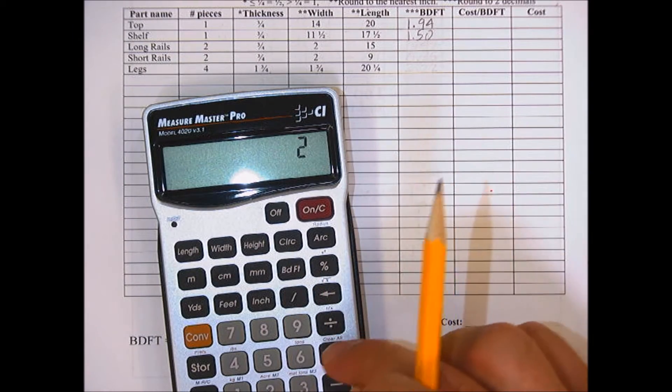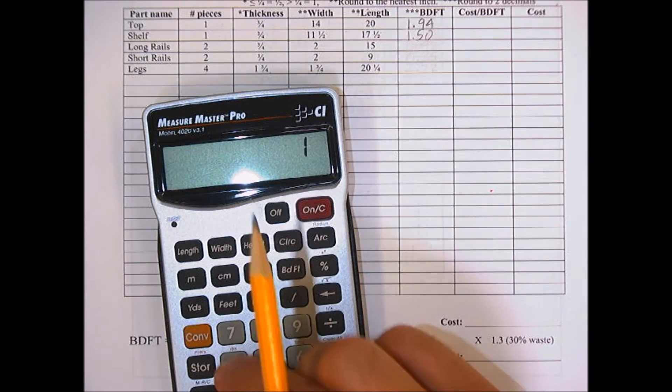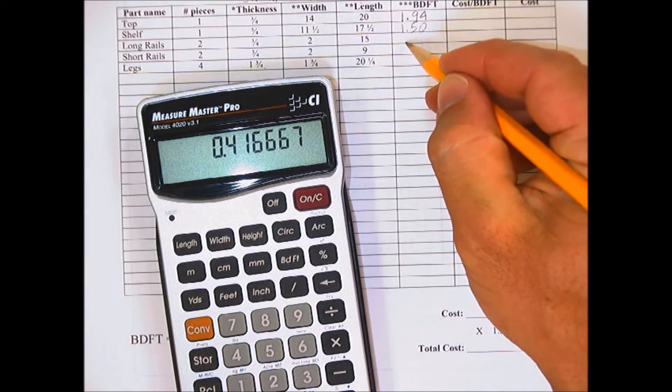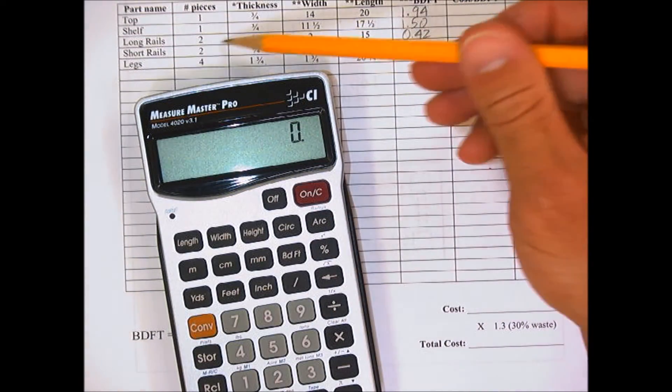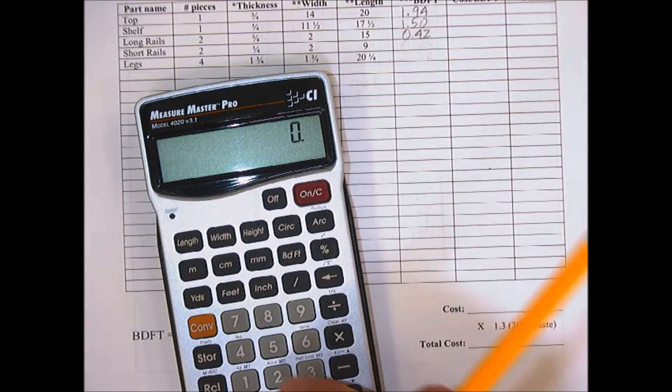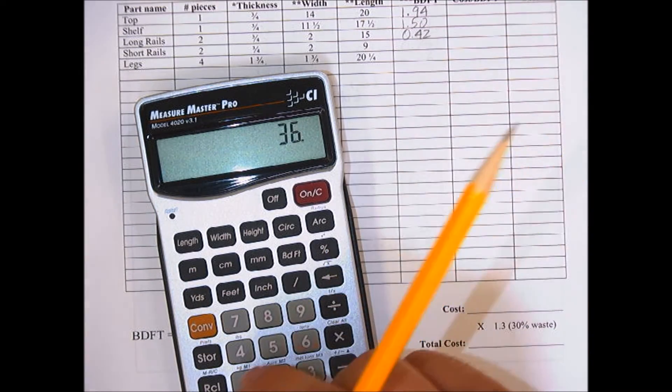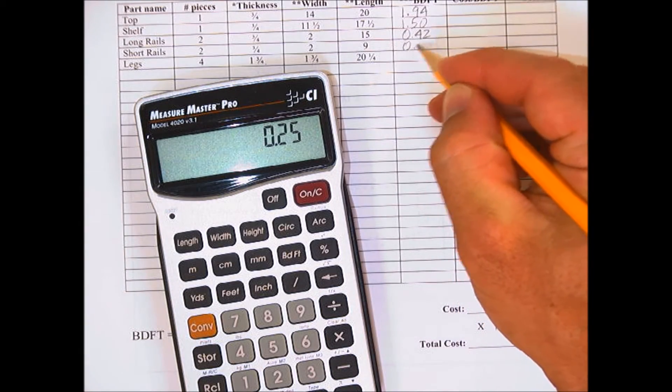So we can do 2 times 2 times 15 divided by 144, which equals 0.42. For the short rails: 2 times 1 times 2 times 9 divided by 144 equals 0.25.